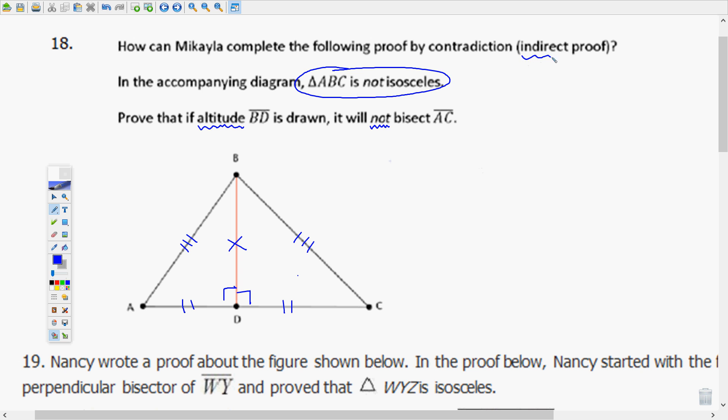So whenever you're doing an indirect proof, you always want to start by stating what you are trying to prove is not true. So it says prove that if altitude BD is drawn it will not bisect AC. What you want to first assume is that segment BD does bisect segment AC. Because then this means AD would be congruent to CD by definition of what a bisector is. Angle ADB is congruent to angle CDB because they are both 90 degrees by definition of altitudes. An altitude comes down to that opposite side and forms a right angle, it's the height of the triangle. BD is congruent to itself by the reflexive property. Anytime something is equal to itself, it's by the reflexive property of equality or congruence.